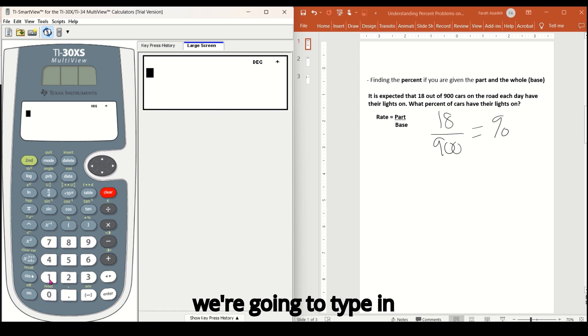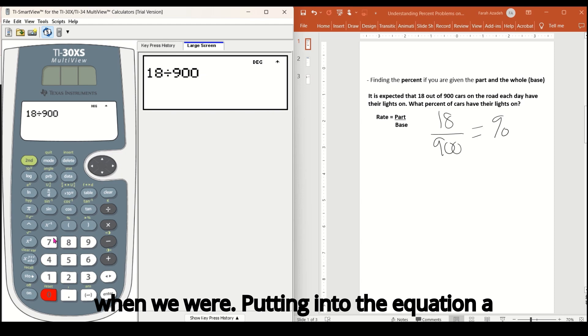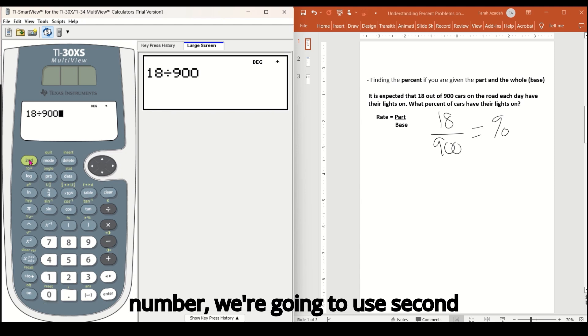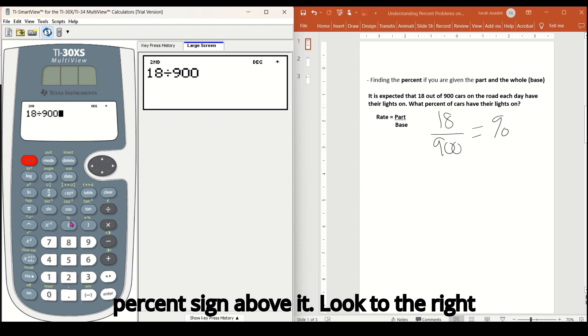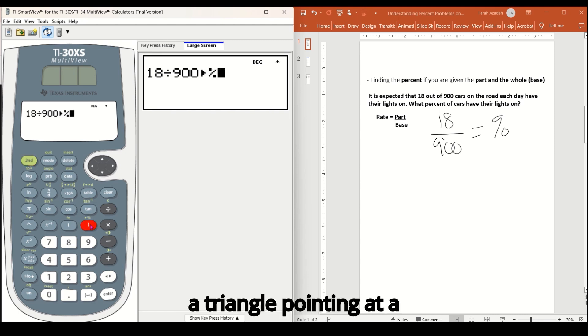So let's go over to our calculator and we're going to type in 18 divided by 900. And like we just did when we were putting into the equation, a percent of a total number, we're going to use second function. And instead of the button over the eight, which is the open parentheses button, remember that has the green percent sign above it, look to the right of that. And that's the close parentheses button. And above that is a triangle pointing at a percent sign. So I'm going to click on that.